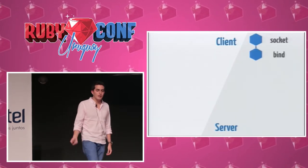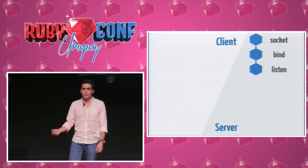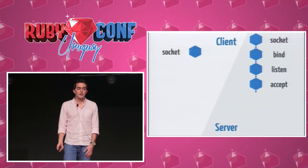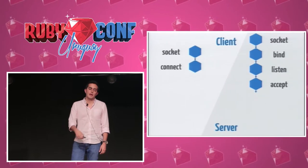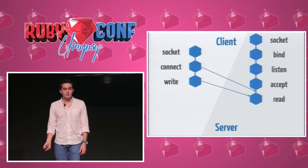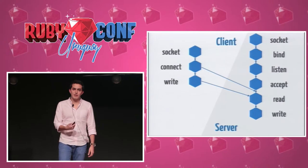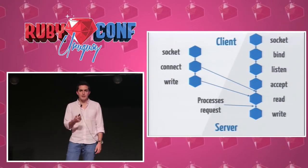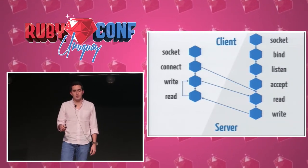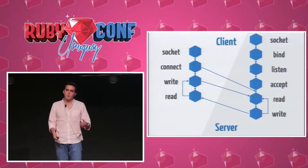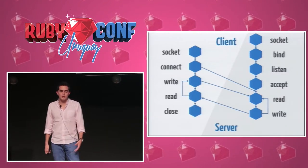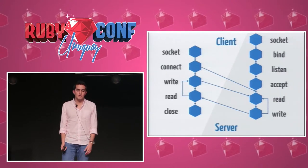Now let's see how we put all this together and how a server and client interact. The server creates a socket, binds to an address, and starts listening. It waits in the accept block until it receives something. The client creates a socket and connects. Once connected, it can start sending data. The server reads the data and can write something back. The client reads the response, can write again, and this continues until the client finally decides to close the connection.